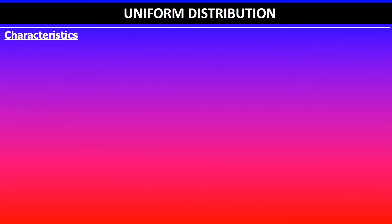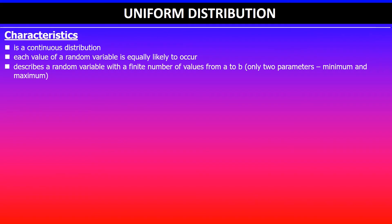So we'll have a look at the characteristics of uniform distribution. You've already seen from the previous flowchart that it is a continuous probability distribution, and each value of a random variable is equally likely to occur. It also describes a random variable with a finite number of values from a to b.